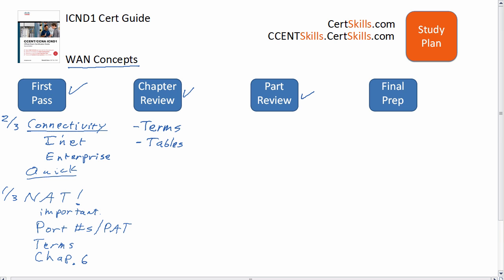Then when you get to the part review — which won't be long because there's just one other chapter in this part of the book, and it shows you how to configure the things that you just read about here in chapter 16 — you should be able to list all those major technologies, all those major network connectivity features from memory by this point. And if you can't, just review. You also should have mastered NAT concepts by now, in particular those port numbers.